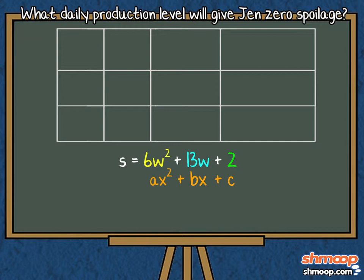The first involves our A term, 6W squared. There are two possible ways to factor 6W squared: 3W and 2W, and 6W and W. The second column factors our C term, 2. The only possible factors are 2 and 1.